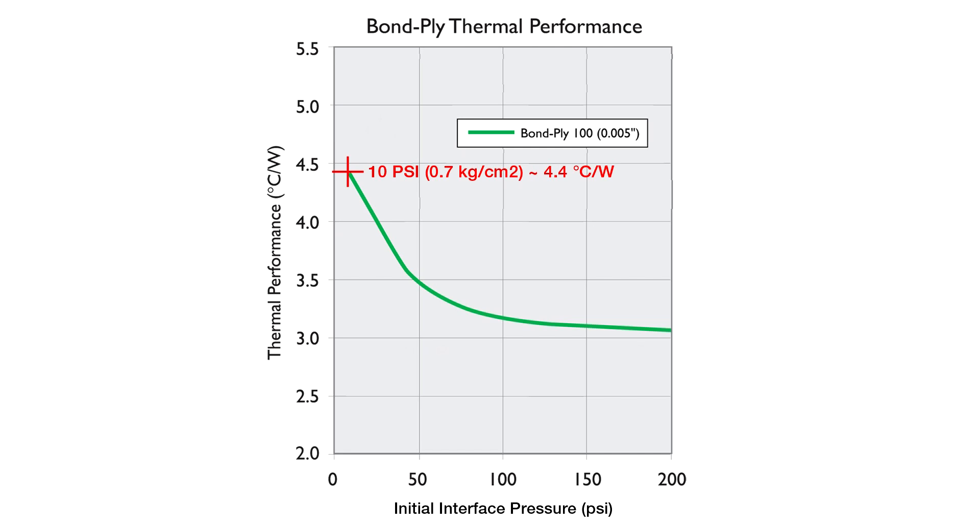While if we apply about 100 pounds of initial pressure, this will improve to about 3.2 degrees C per watt. This pressure only needs to be applied for about 30 seconds when you first assemble the LED to the heat sink.